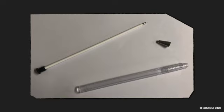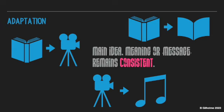Let's look at how that works in texts. With an adaptation, we can go from a novel to film, from a novel to a graphic novel, or even from a film to a musical — these are all examples of adaptation. In these, the main idea, meaning, or message remains fairly consistent with the original. The idea is that it has been adapted to a new context without changing the meaning, trying to stay true to the original composer's purpose.